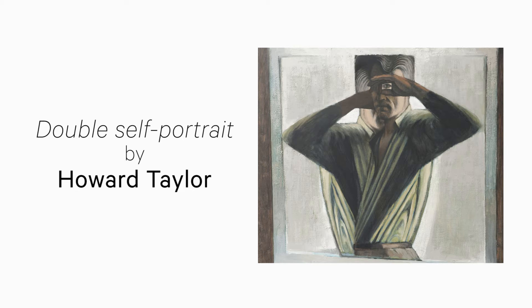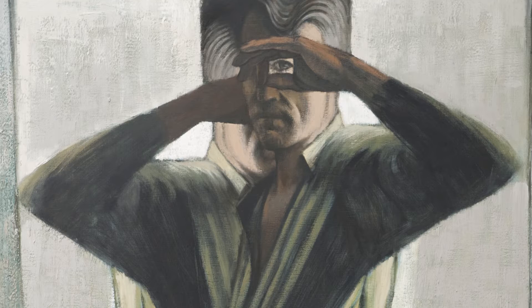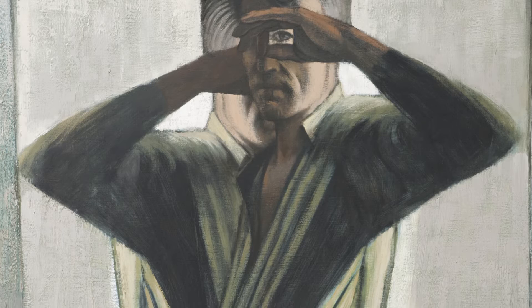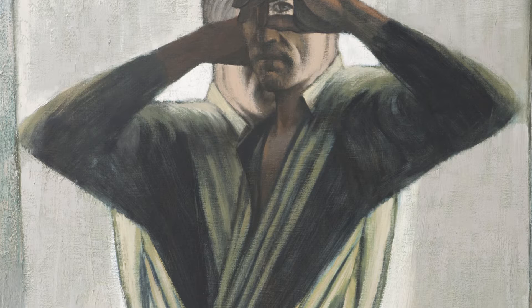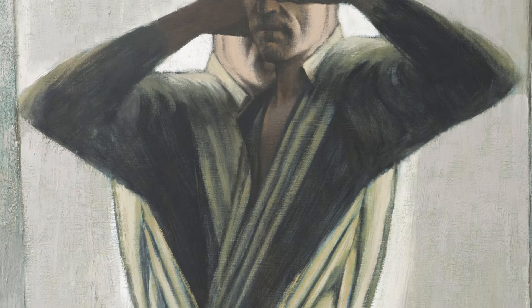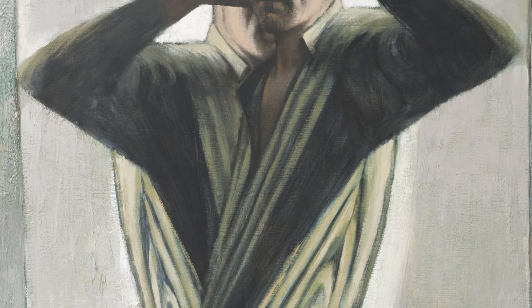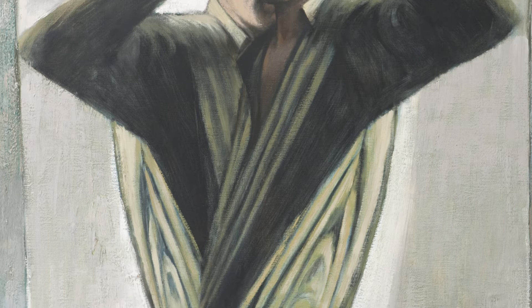Double Self-Portrait by Howard Taylor. Howard Taylor was born in Victoria and moved to Western Australia with his family in 1932. Although widely known within his home state, Taylor's work virtually remained unknown outside of Western Australia, leaving his work and impact insulated. This insulation, however, fueled his art practice into becoming a unique and individual style, as he did not actively seek other artistic influences. Double Self-Portrait is one of only two self-portraits completed by Taylor.